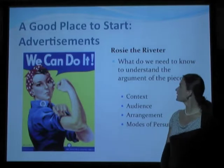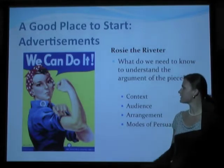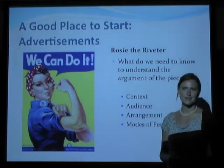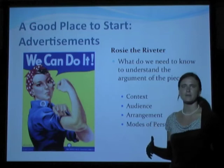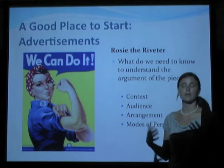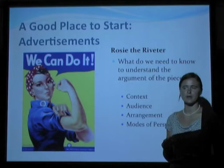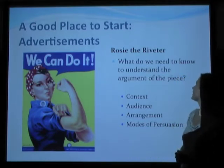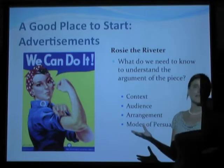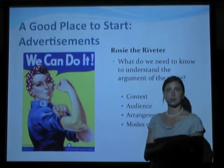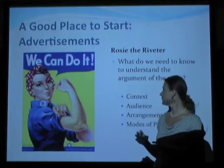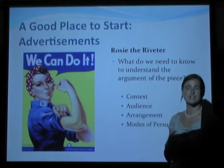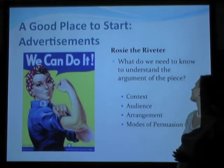A good place to start studying visual rhetoric is with advertisements. This is Rosie the Riveter, an illustration created in 1942 for the War Department in order to get women to leave the home and work in factories to produce the resources needed overseas to win World War II. Rosie is producing rivets and she's also an integral part of the machine itself, which makes possible the winning of the war.